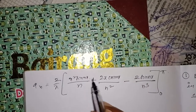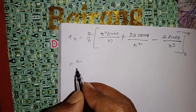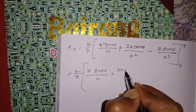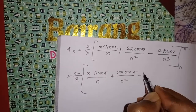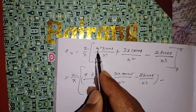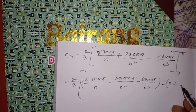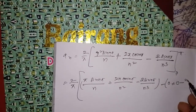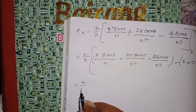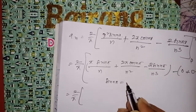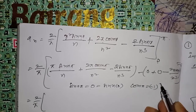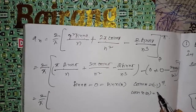Substituting the upper limit x = π minus lower limit x = 0: upper limit gives π²·sin(nπ)/n + 2π·cos(nπ)/n² - 2·sin(nπ)/n³. Lower limit: all terms are 0. Using sin(nπ) = 0, cos(nπ) = (-1)^n, sin(0) = 0.